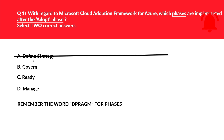Let's look at option B, that is Govern. If you look at this word, Govern fits here at the letter G. If you look after Adopt, that is G falls after A. Hence this seems to be one of the valid answers. We'll keep this.